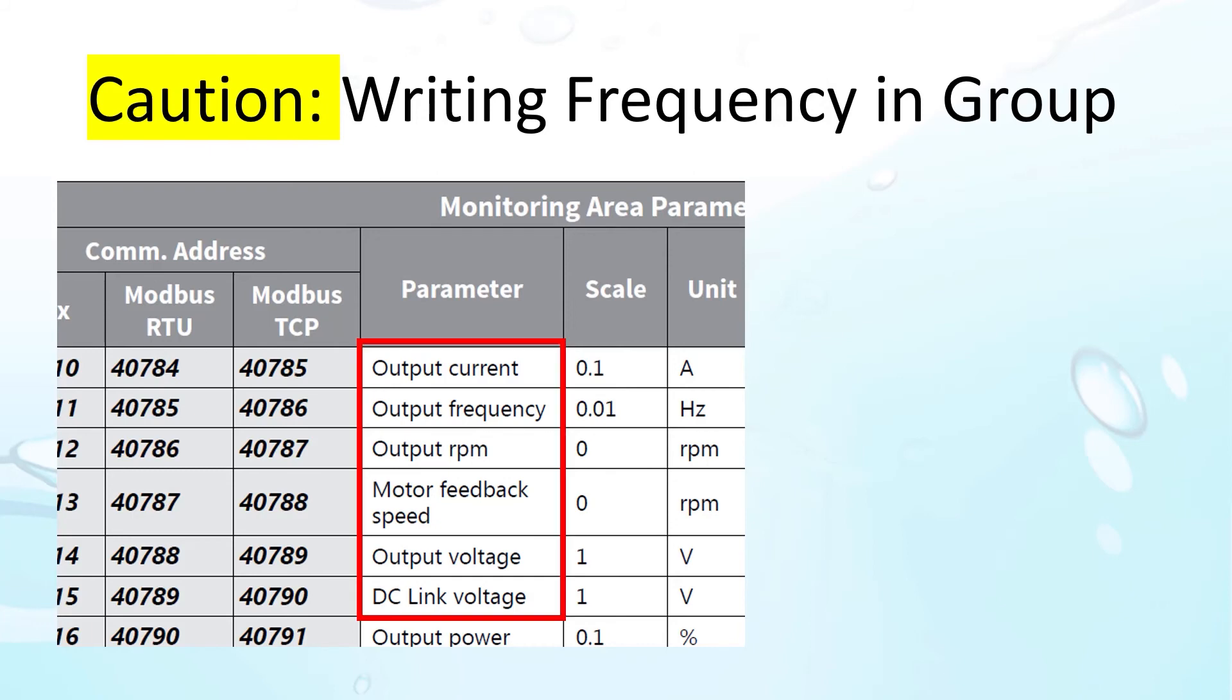If you are writing a group of parameters that includes the drive frequency, make sure you also specify the corresponding RPM. If you forget to update the RPM, then when this group is written, the RPM parameter will overwrite the frequency. So make sure they are the same when sending a group of parameters that contains either.